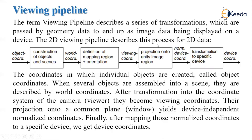The 2D viewing pipeline describes this process for 2D data. First of all, we construct the object and scene. The object will have its own coordinate, that is object coordinate — the coordinates in which individual objects are created are called object coordinates. Then we assemble that object into a scene and describe it in the world coordinate. After transformation into the coordinate system of the camera or viewer, they become the viewing coordinate. After displaying it onto the display device, we take the projection into device-independent normalized coordinates, and finally we map these normalized coordinates to a specific device to get the device coordinate. Finally, the image gets displayed on the computer screen. So this is the viewing pipeline.